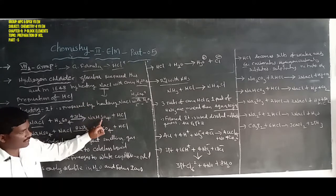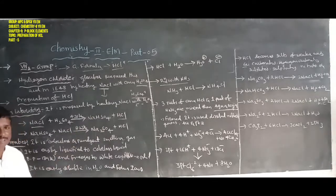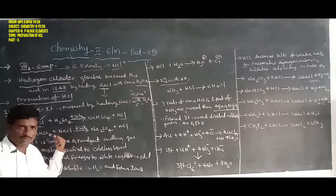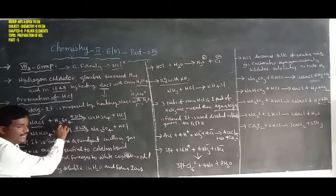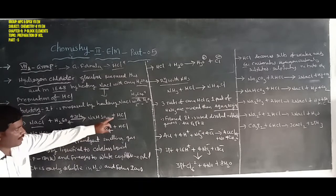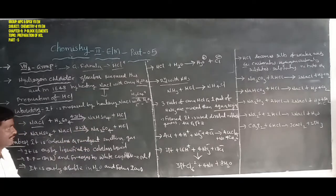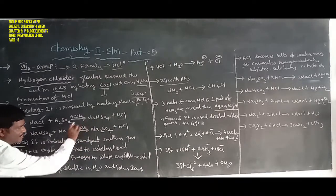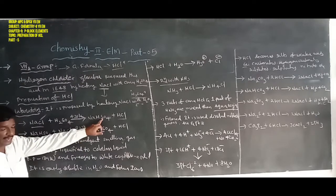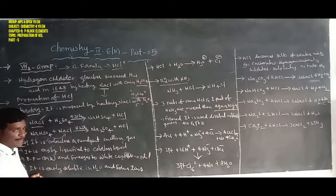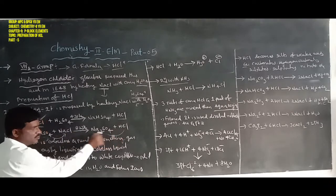The product sodium bisulfate, also known as sodium hydrogen sulfate, is formed in the first reaction. In the second reaction, sodium bisulfate combines with another portion of common salt (sodium chloride) at 823 Kelvin temperature to form hydrochloric acid and sodium sulfate.